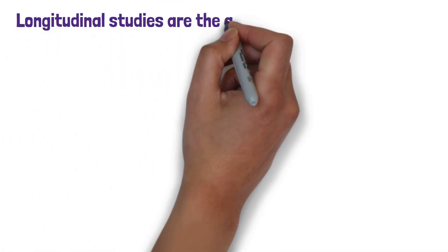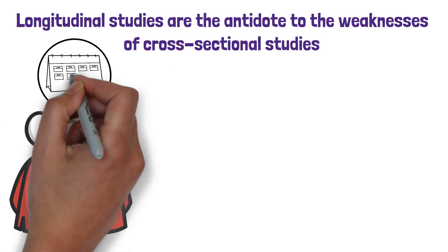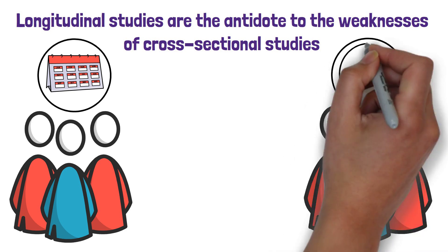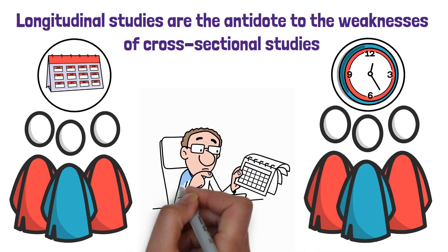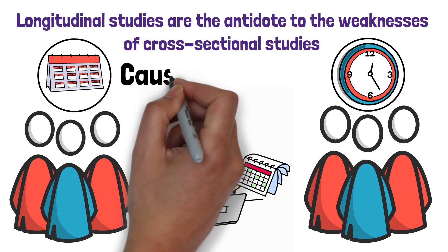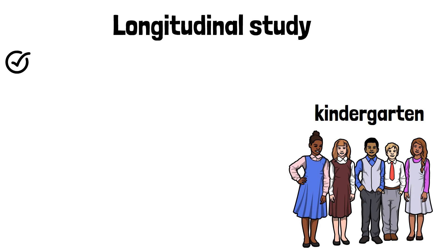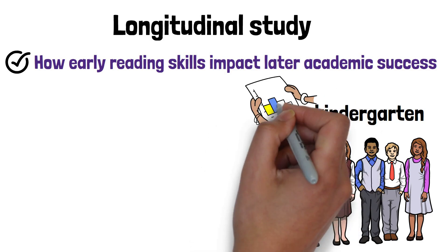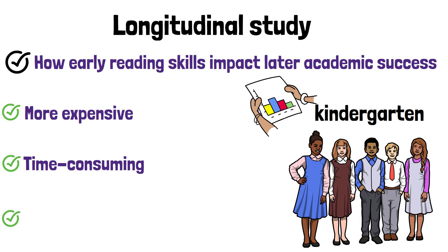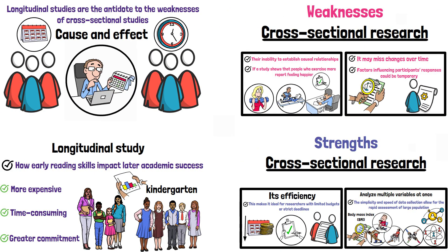In many ways, longitudinal studies are the antidote to the weaknesses of cross-sectional studies. Longitudinal studies follow the same group of individuals over an extended period. While cross-sectional research provides a quick look at a moment in time, longitudinal studies capture data across different points, helping researchers track changes and developments. This design allows for a deeper understanding of cause and effect, as researchers can observe how variables change over time. For instance, a longitudinal study might follow a group of children from kindergarten through high school to study how early reading skills impact later academic success. While this approach offers detailed insights into long-term trends and causation, it is more expensive, time-consuming, and requires a greater commitment from both researchers and participants compared to cross-sectional studies.